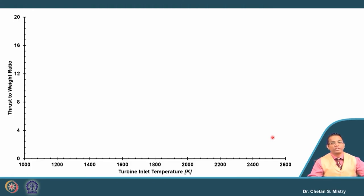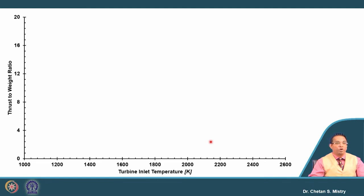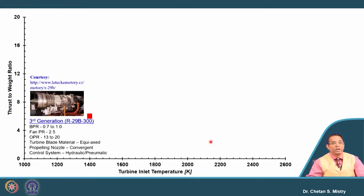Before starting, let us look at this plot which gives different kinds of information. On the x-axis we have turbine entry temperature or inlet temperature, and thrust-to-weight ratio. When talking about applications for military as well as commercial aircraft, our expectation is more towards thrust-to-weight ratio. But here this thrust-to-weight ratio is different compared to commercial engines. This is the third generation engine — the R29B 300 — where the turbine entry temperature is in the range of 1400 Kelvin and the thrust-to-weight ratio is roughly around 6 to 7.